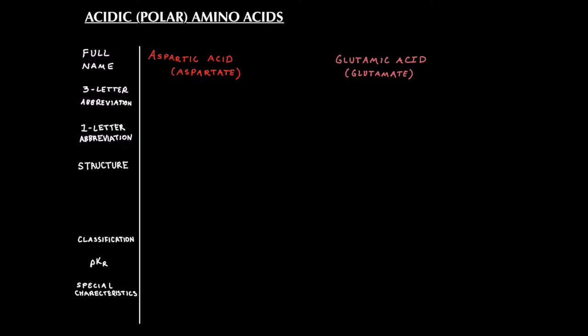How's it going everyone? This is High Yield MCAT, and today we're going to be talking about a particular classification of amino acids, specifically the acidic or polar amino acids, of which there are two.